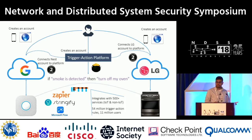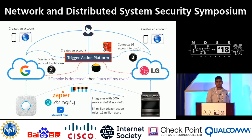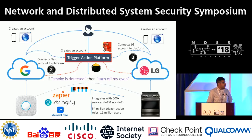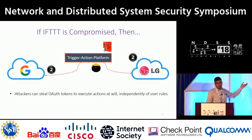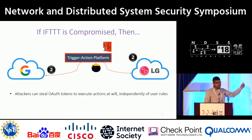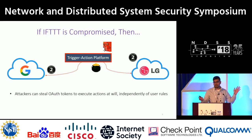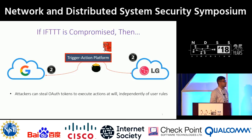As security researchers, the natural question to ask is: what if this web application — the trigger action platform is just a web app — what if that web app is compromised? That is the central question we are looking at in this work. The answer may be obvious: if the platform is compromised, attackers can steal OAuth bearer tokens and invoke actions arbitrarily. They can turn off the oven, turn it on, turn on a lawnmower, open your doors — they can do whatever they want, as long as you've connected it to the trigger action platform.